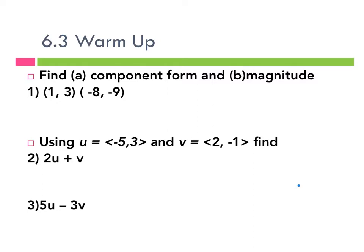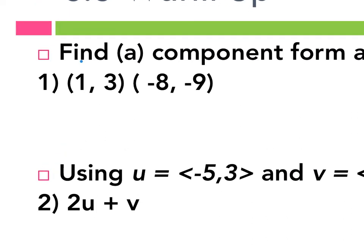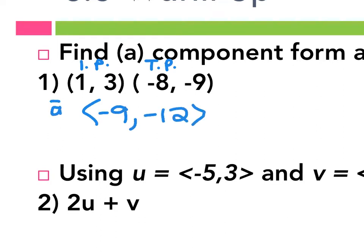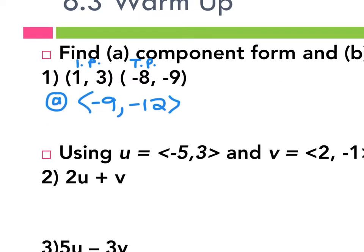So A and B for number one: component form and magnitude. The component form — remember, I'm going to say this is the initial point and this is the terminal point. You will be given it on your test, like which one is which. So if the second one is the terminal point, I would do negative eight minus one and get negative nine, and then negative nine minus three and get negative twelve. So that's the component form for number one.